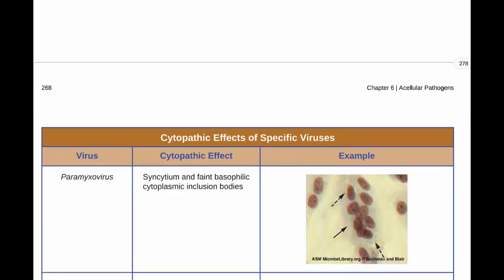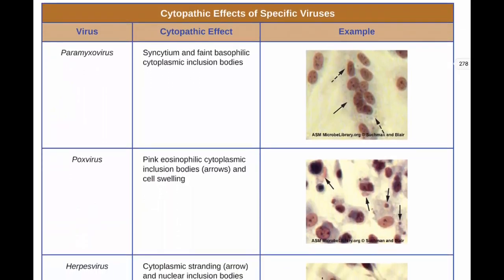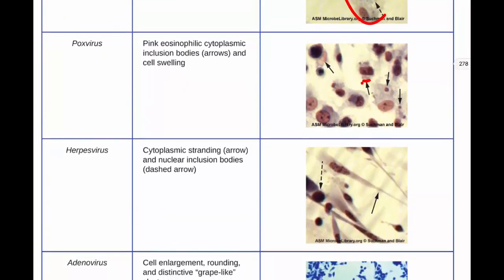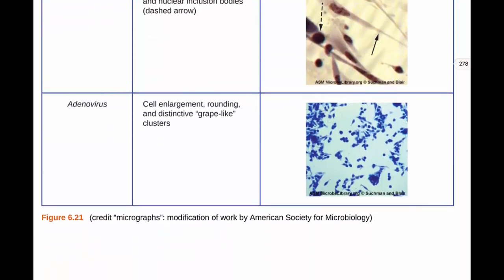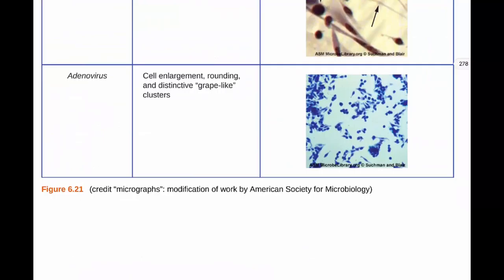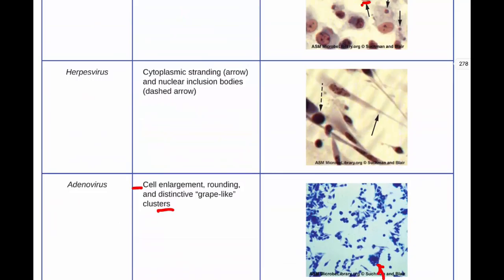This chart shows different viruses and their cytopathic effects — you don't need to memorize the specific virus-to-effect pairings, just understand these are some of the effects. For example, you can see multinucleated syncytia with lots of nuclei within a clump of cytoplasm, inclusion bodies showing chunks of proteins or copies of RNA or DNA, cell enlargement, and cells forming in clusters — all different changes based on viral infection.